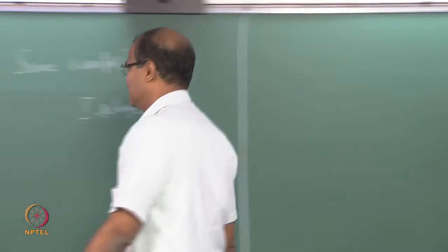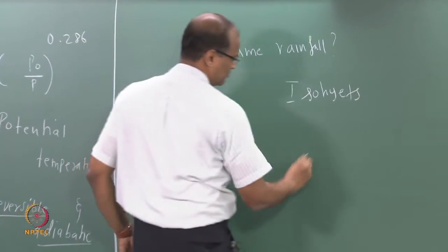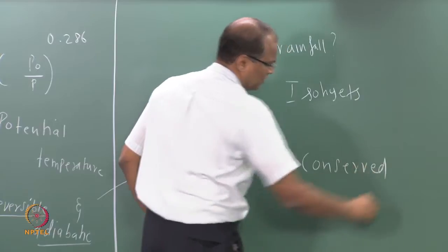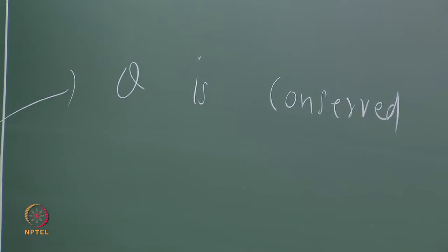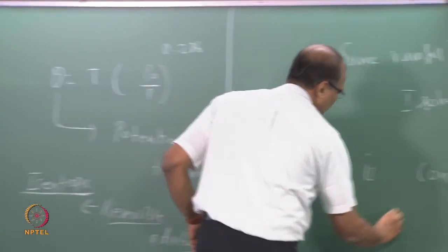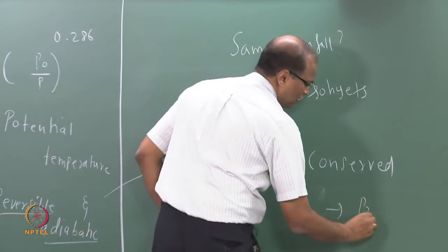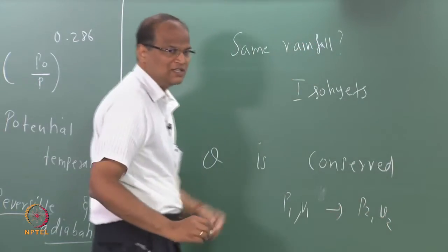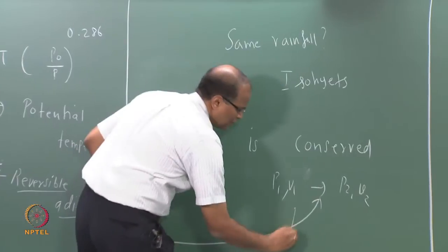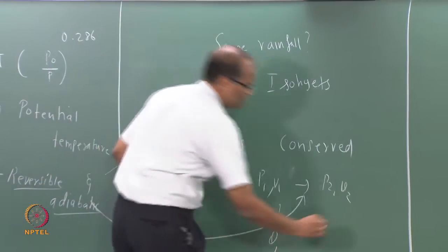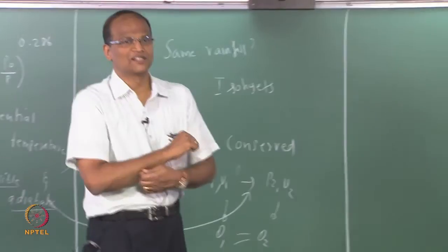For a reversible adiabatic process, we proved that theta is conserved. Theta is conserved means theta remains the same throughout. We already proved that if you have p1 v1 to the power of gamma going to p2 v2 and you take this route, then theta 1 and theta 2 are the same. We proved this in yesterday's class.